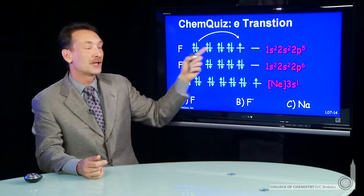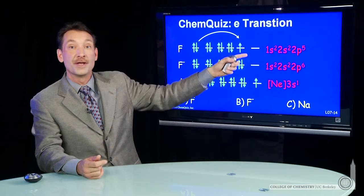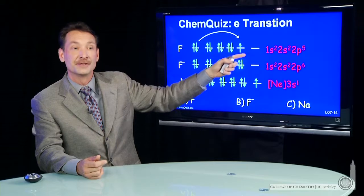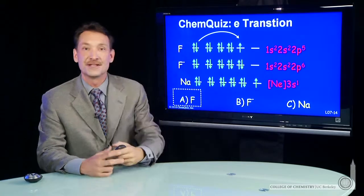n=1 to n=2 can occur in fluorine because there's an open 2p orbital. Of these three, fluorine is the only possibility.